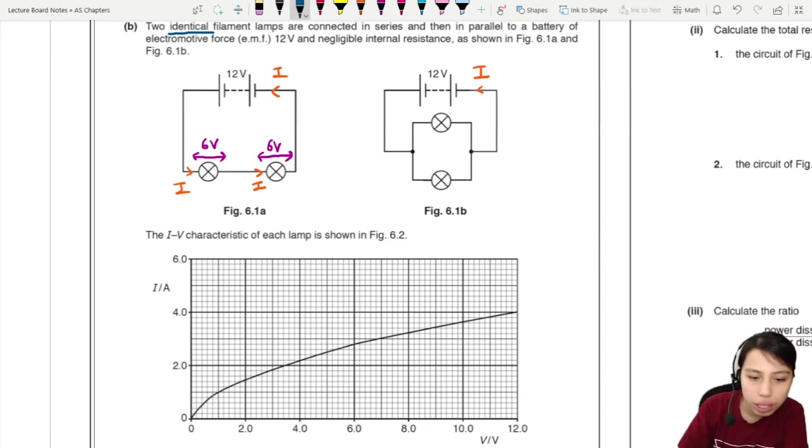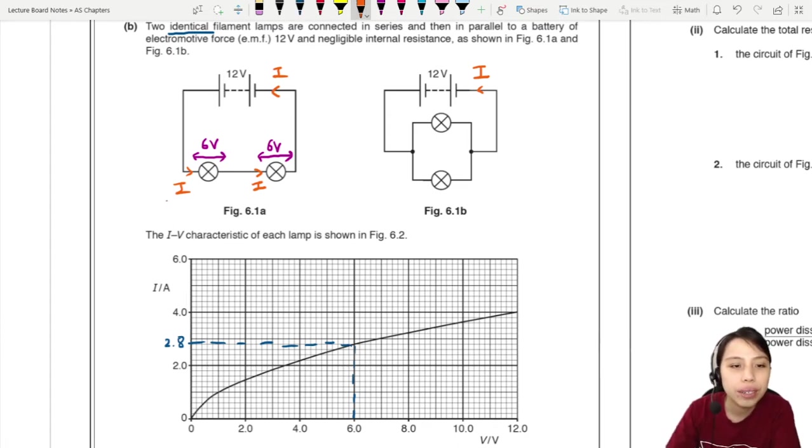We're going to find that in first part, 6 volts. What current would that be? And there will be somewhere here. This should be 2.8. 2.8 amps going through each of these. So the battery will also have 2.8 amps.